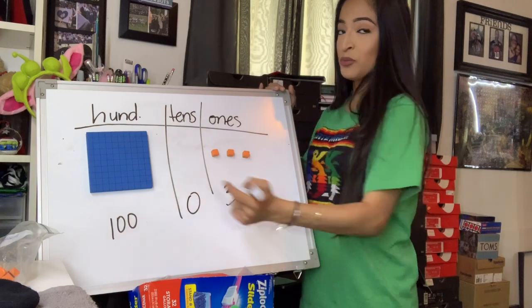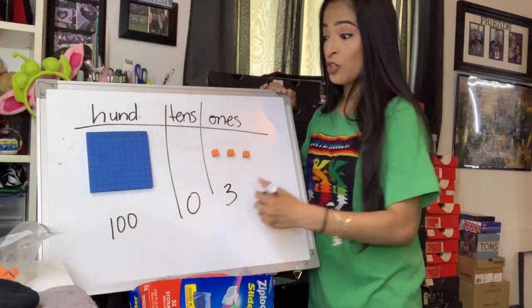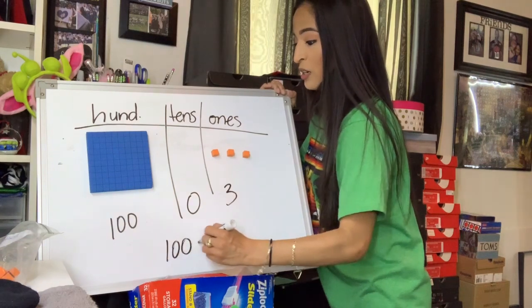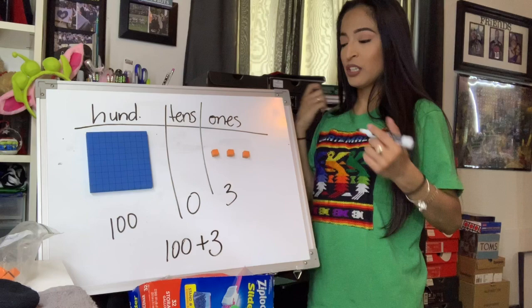We don't have to write the zero when we write in an expanded form. So for our answer, it would be 100 plus 3, which gives us the number 103.